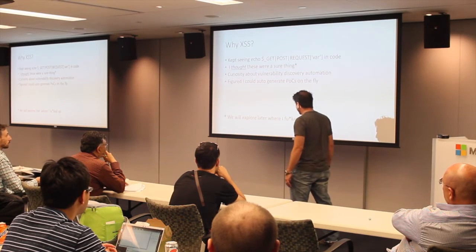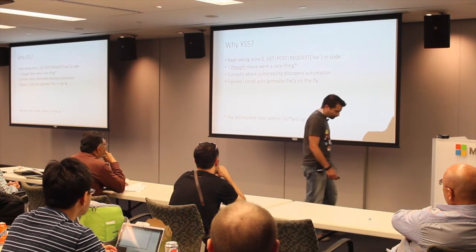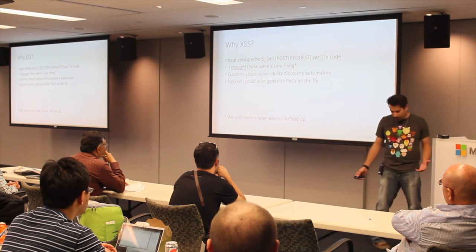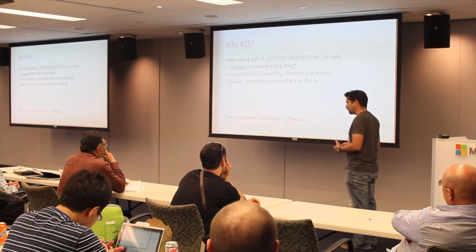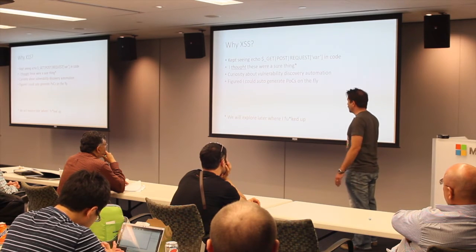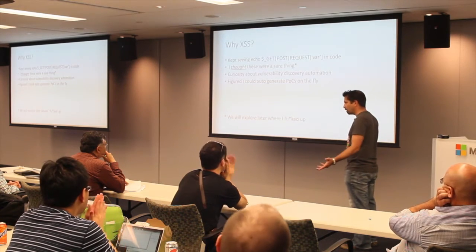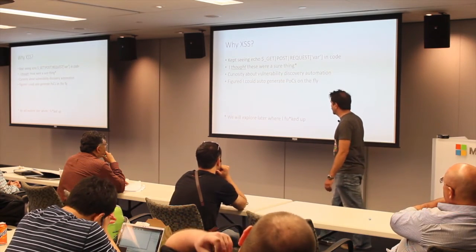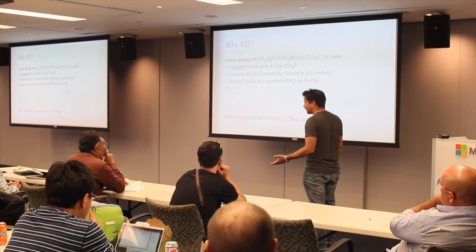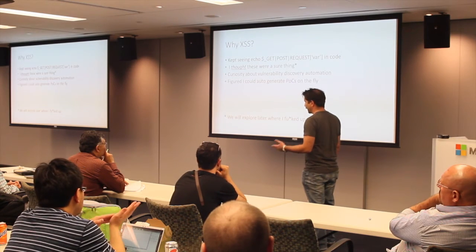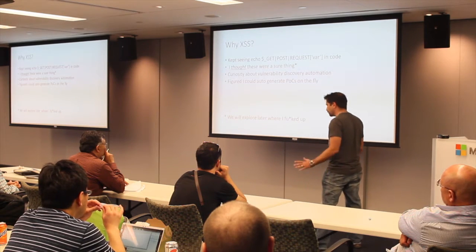I'll go over that later in the mess-up slide. I had a lot of curiosity about automating vulnerability discovery, automated proof-of-concept generation, and proof-of-concept verification. It wasn't really about cross-site scripting — it was more about: can I get my computer to do this for me and then check the logs every couple of hours? I figured these would be pretty easy: just break a script tag, echo an alert, JavaScript in, and close the script tag.